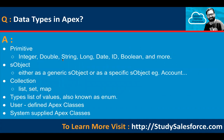Another question could be: what data types are available in APEX? You can say we have primitives, which include integer, double, string, long, date, ID, boolean, and more. Then we have SObject, either as a generic SObject or as a specific SObject, for example account. Then we have three collection types: list, set, and map. These three can be used as data types in APEX.